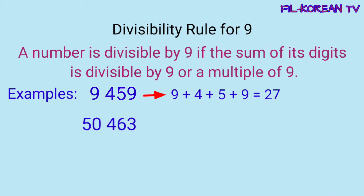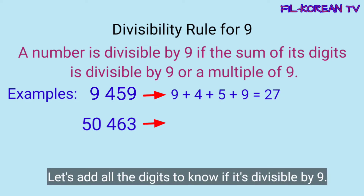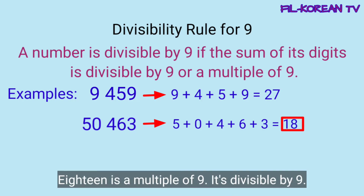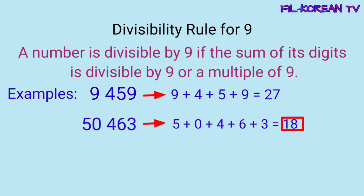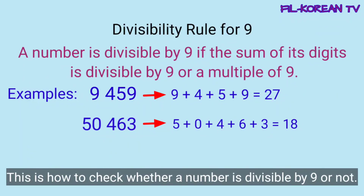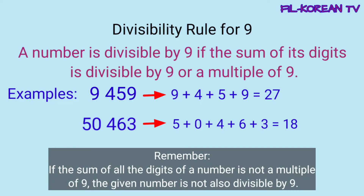Another example, 50,463. I-plus natin ang lahat ng digits para malaman natin kung ito ay divisible by 9. 5 plus 0 plus 4 plus 6 plus 3 equals 18. Ang 18 ay multiple ng 9. Kaya divisible ito ng 9. Kaya naman, yung given number na 50,463 ay divisible ng 9. Ganito lang yung paraan ng pag-check kung ang isang number ay divisible ng 9 o hindi. At tandaan na kapag ang sum ng digits ay hindi multiple ng 9, ibig sabihin yung given number ay hindi rin divisible by 9.